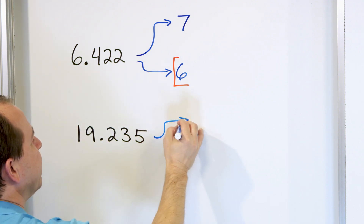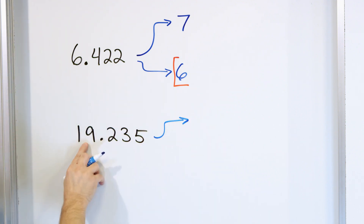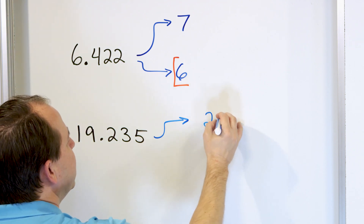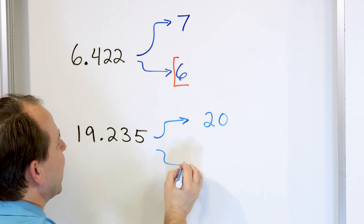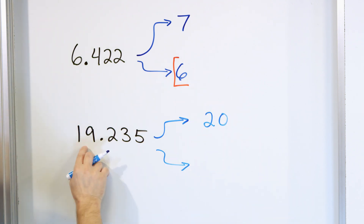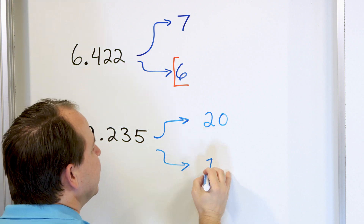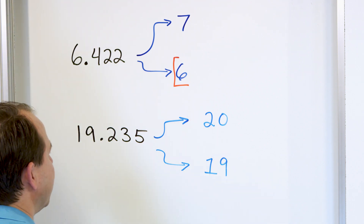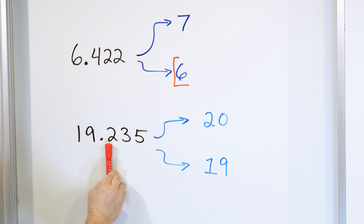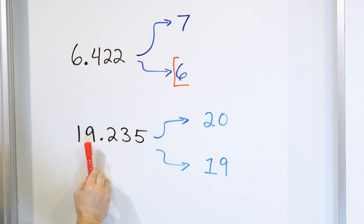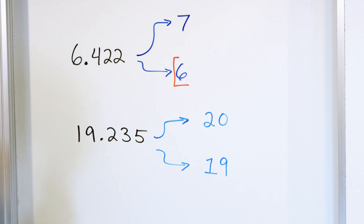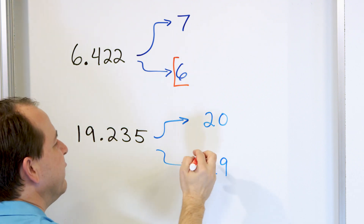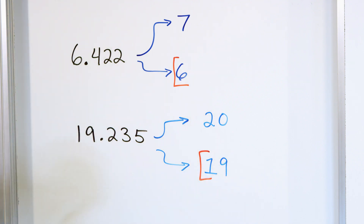If we're rounding to the nearest whole number, we either round up to 20 or round down and stay at 19. To figure it out, look next door beyond the decimal point. We're rounding to the nearest whole number, so we look at the 2 in the tenths place. Since 2 is less than 5, we round down — the answer is 19.